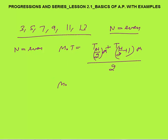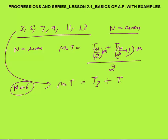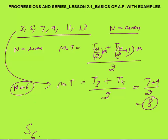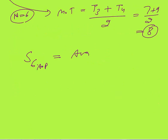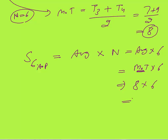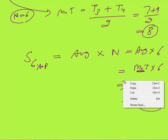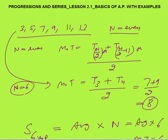In our case for the AP 3, 5, 7, 9, 11, 13 where n equals 6: the middle term is the 3rd term plus the 4th term divided by 2, which is 7 plus 9 by 2, equals 8. So the middle term is 8. The sum of 6 terms of this AP is middle term into number of terms: 8 into 6 equals 48. Let's verify: 3 plus 5 plus 7 plus 9 plus 11 plus 13 equals 48. Confirmed.